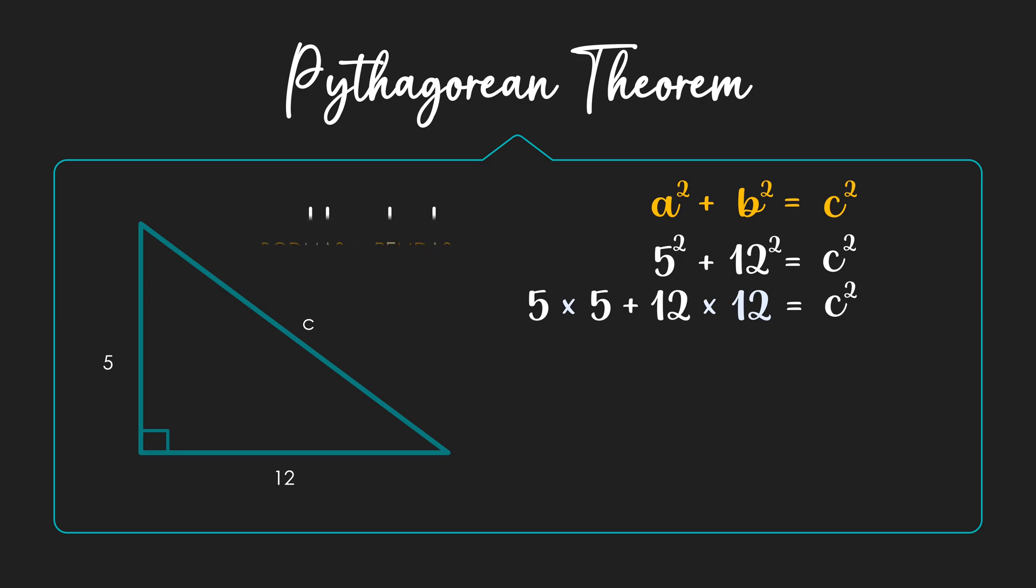So, I'll do multiplication first and get 25 plus 144 equals C squared. That's 169 equals C squared. I'll add a square root to both sides and the square on C will get cancelled with the square root since a number squared is the opposite of its square root. And root 169 is 13.